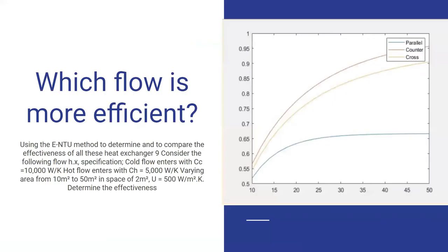Now we compare which flow is more efficient. Parallel flow, cross flow or counter flow. We solved a problem using Epsilon-NTU method. We took some constant values of cold water and hot water. And we took some area. We varied the area from 10 meters square to 50 meters square. We took a particular value of U and we found out effectiveness. As you can see the graph, as the area increases, the effectiveness increases and for the three typical heat exchangers, the counter flow heat exchanger is more efficient and the parallel flow heat exchanger is least efficient.